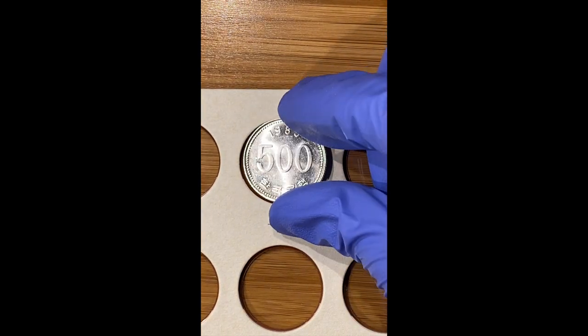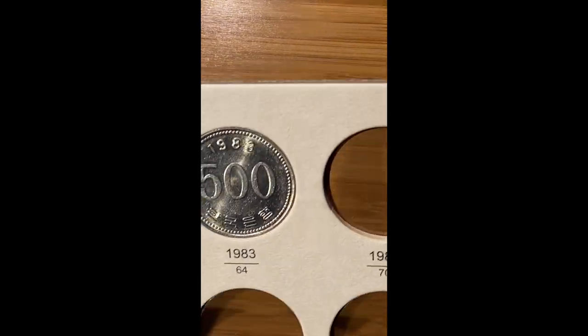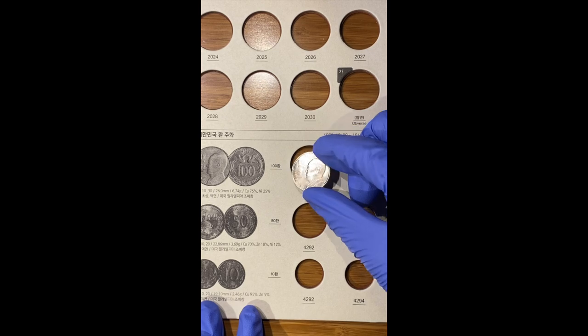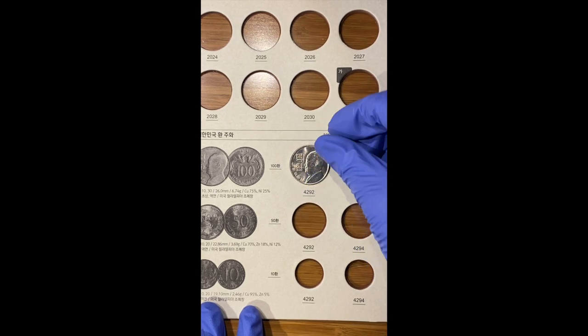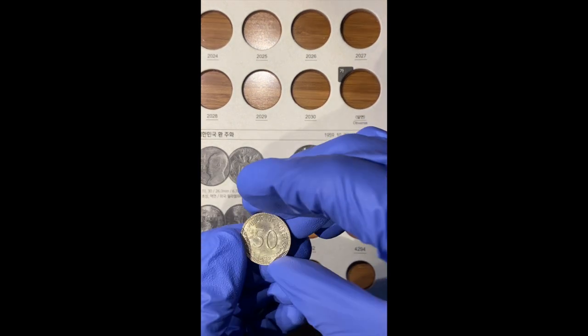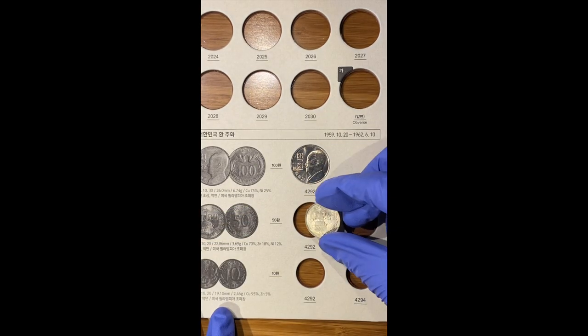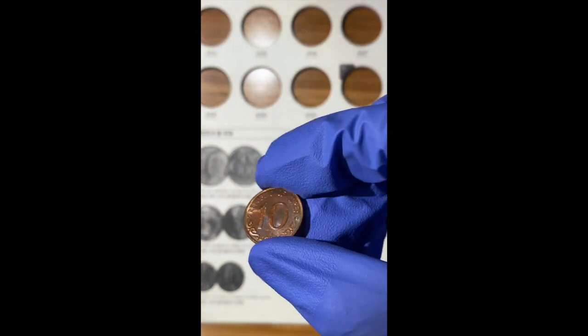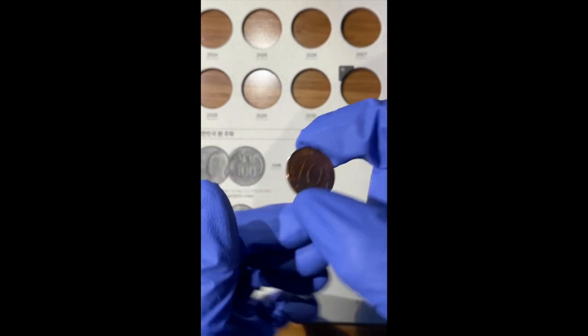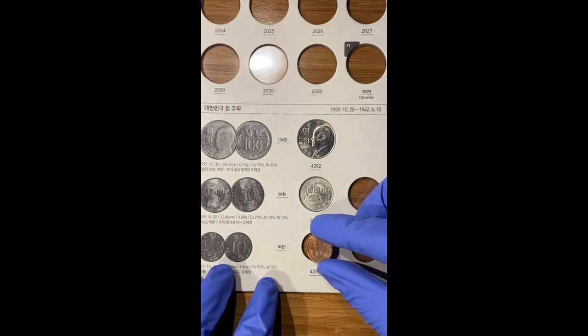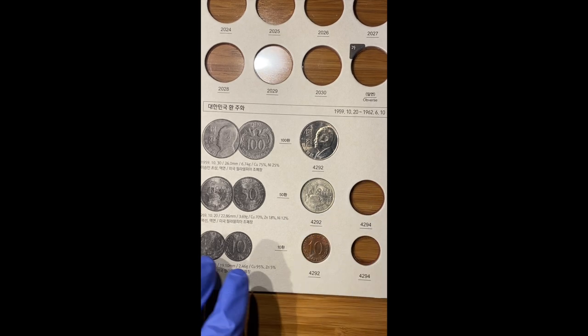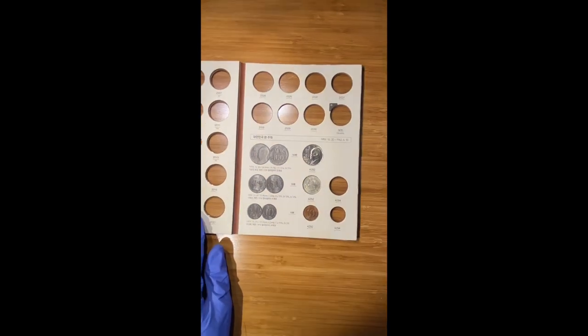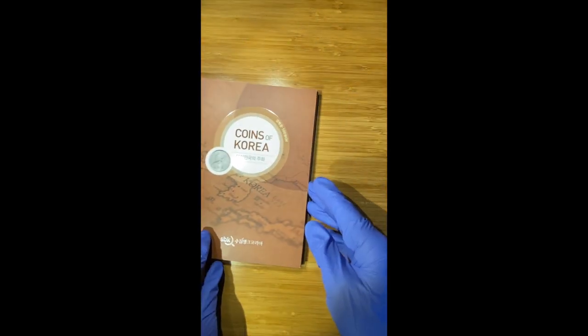Let's check the fit for the hole for the five hundred-won coin. Let's place an example of each of the Hwan-denominated coins. I have a very nice example of a 4292 dated ten-Hwan coin that I can fit in here. The friction fit of all these coins fit quite well, which is surprising since I have heard from people who had bought the earlier versions of these albums that the coins sometimes fell out of the holes.